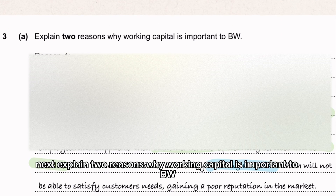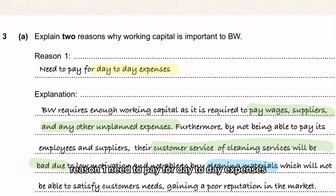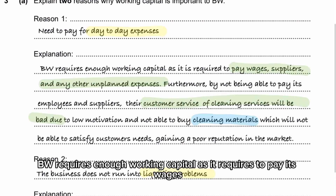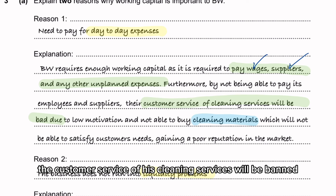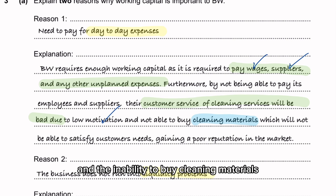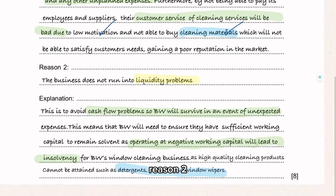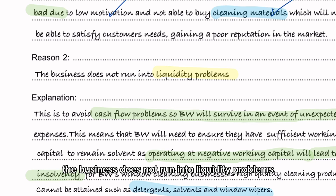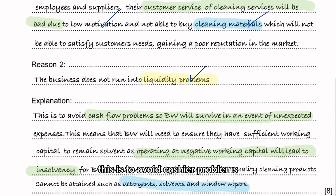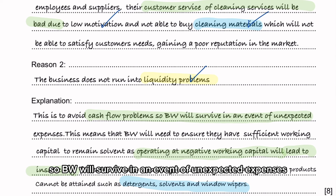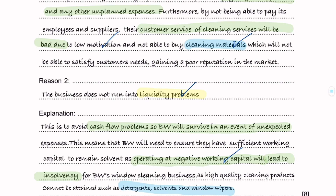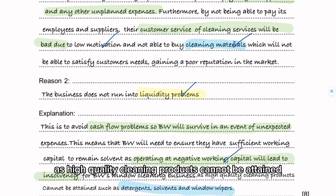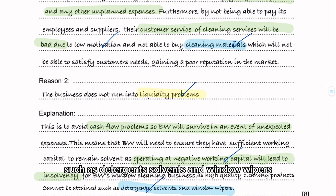Next, explain two reasons why working capital is important to BW. Reason one: the need to pay for day-to-day expenses. BW requires enough working capital to pay wages, supplies, and any other unplanned expenses; if it cannot do so, the customer service of its cleaning services will suffer due to low motivation and the inability to buy cleaning materials. Reason two: to avoid liquidity problems. This avoids cash flow problems so BW can survive unexpected expenses, because operating at a negative working capital will lead to insolvency — meaning high-quality cleaning products such as detergents, solvents, and window wipers cannot be obtained.